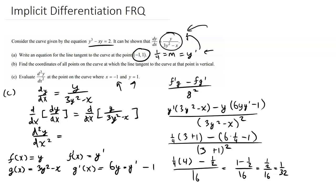So the second derivative at the point (negative 1, 1) is 1 over 32. We just have to be really careful with the algebra — that's what causes most mistakes. The key takeaway is understanding what derivatives mean: they give the slope of the tangent line. This works with implicit equations just like explicit ones. Just remember that y is a function of x. That's it for this video.